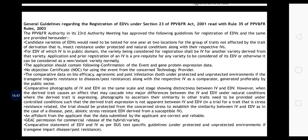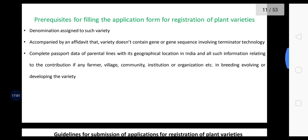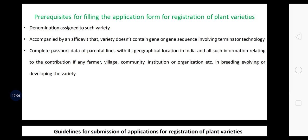There are certain guidelines for essentially derived varietal registration which come under Section 23 of the PPVFR Act 2001 and Rule 35 of PPVFR Rules 2003. For the application form, the requisites include: denomination assigned to the variety (a symbol or name), accompanied by affidavit that the variety does not contain gene or gene sequence involving terminator technology — terminator and traitor technologies are purely prohibited. Complete passport data of parental lines with geographical location in India, and all information relating to the contribution of any farmer, village community, institution or organization in breeding or developing the variety must be included.